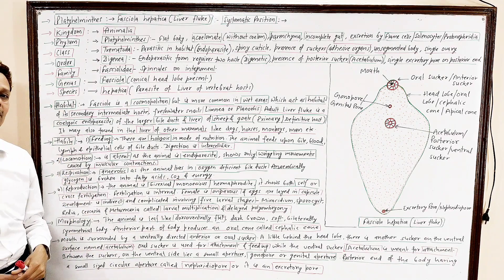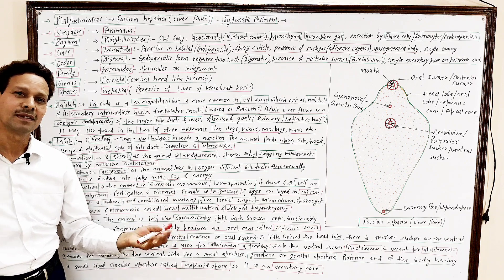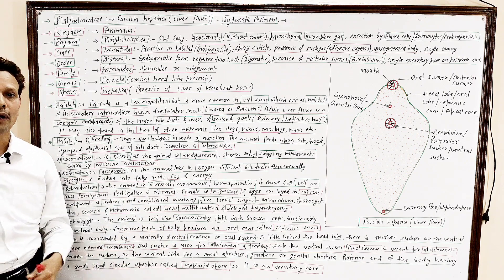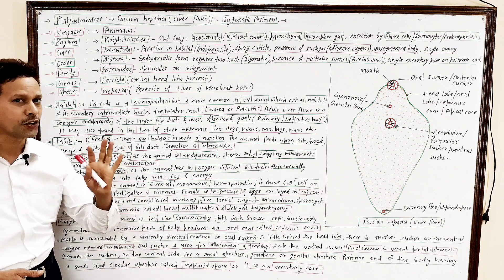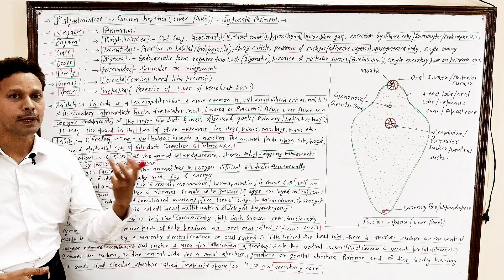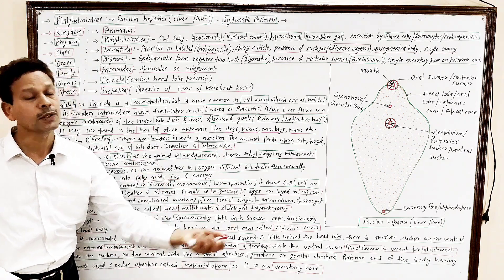Locomotion. The animal is without any locomotory organelles. No locomotory organelles. It shows only wriggling movements due to presence of muscular contraction.